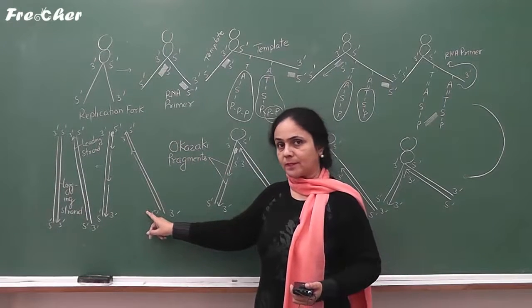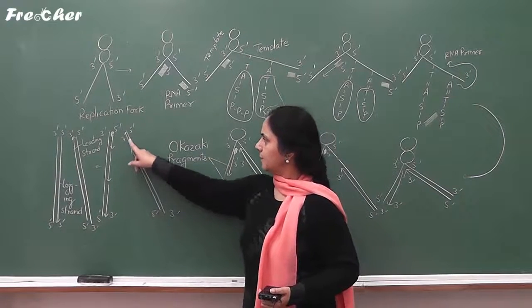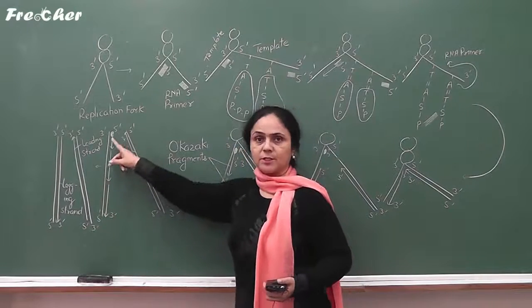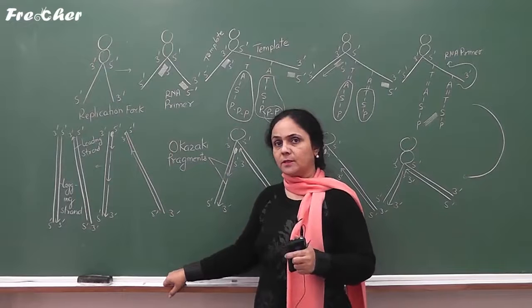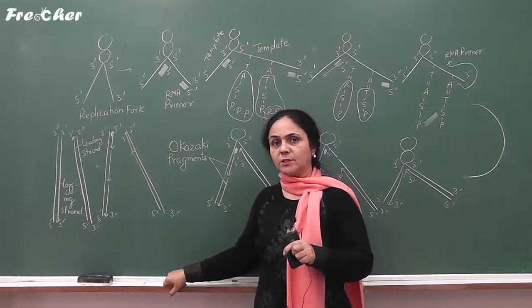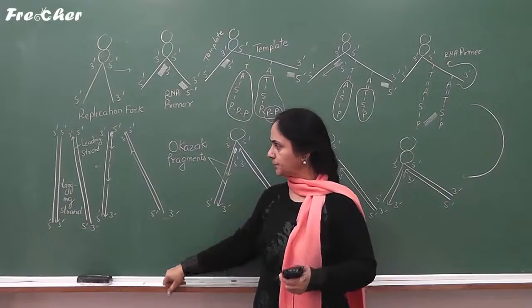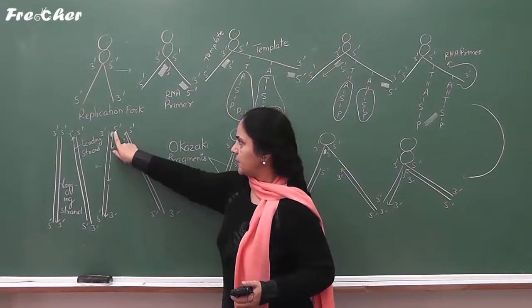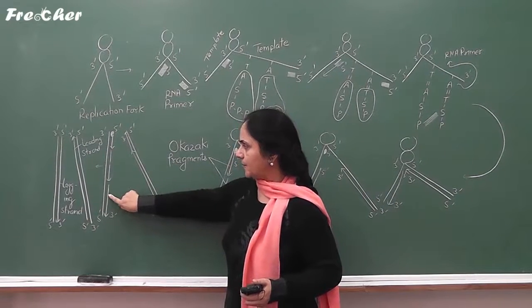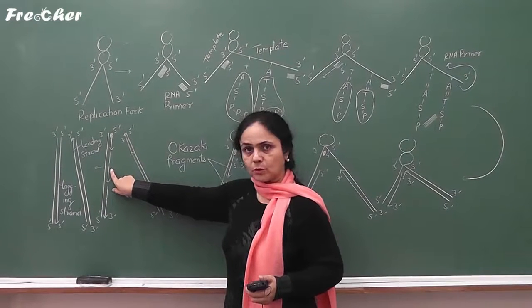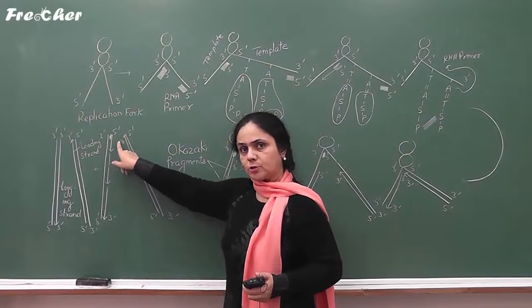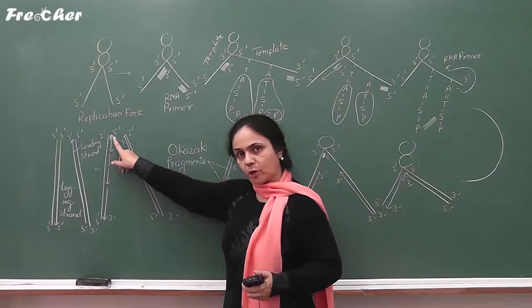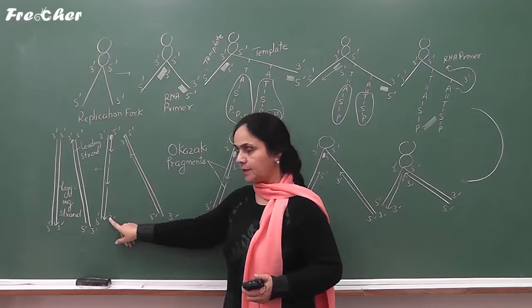One thing which is very clear from this diagram is that both the leading strand and lagging strand formation occur in the 5'→3' direction. DNA polymerase 3, which is the main enzyme of DNA replication, polymerizes in the 5'→3' direction. However, the growth of the lagging strand occurs in the 3'→5' direction — meaning fragment 1 joins to fragment 2, then to fragment 3 — but each individual fragment is still formed in the 5'→3' direction.